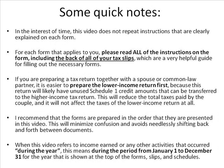This video does not repeat instructions that are clearly explained on each form. For each form that applies to you, please read all the instructions on the form, including the back of all your tax slips, which are a very helpful guide for filling out the necessary forms. If you are preparing a tax return together with a spouse or common-law partner, it is easier to prepare the lower income tax return first, because this return will likely have unused Schedule 1 credit amounts that can be transferred to the higher income tax return. I recommend that the forms are prepared in the order that they are presented in this video.